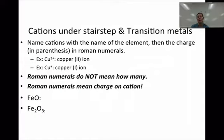So copper 2 ion is copper with the Roman numeral 2 in parentheses, and the copper 1 ion is copper with the Roman numeral 1 in parentheses. So the Roman numeral simply indicates what the charge is.